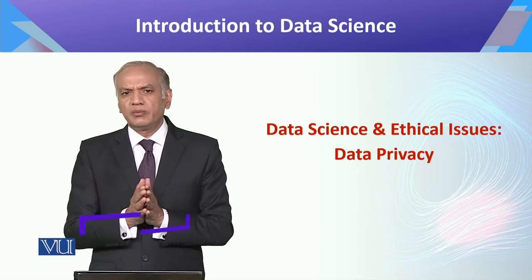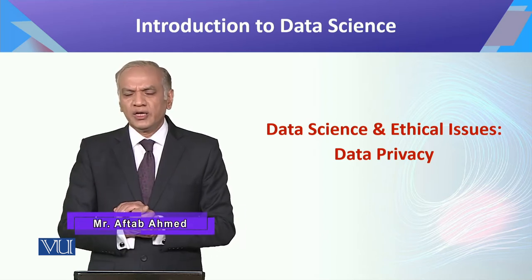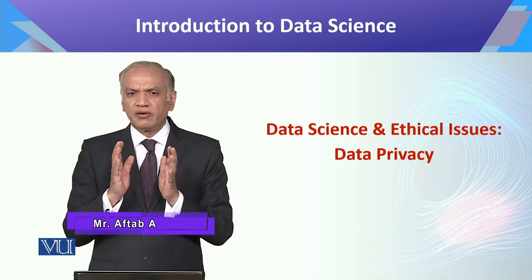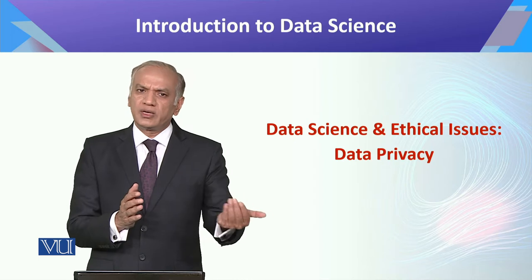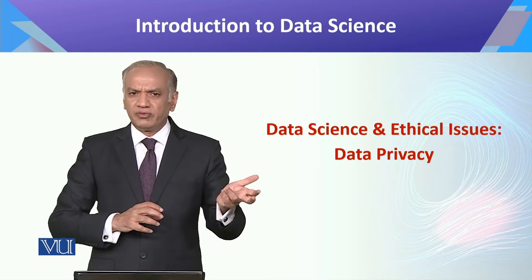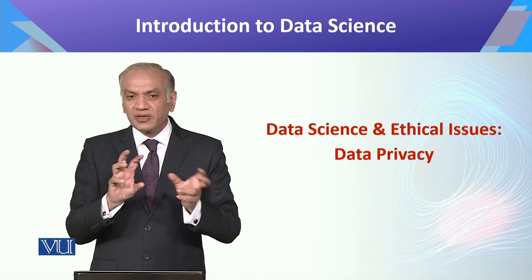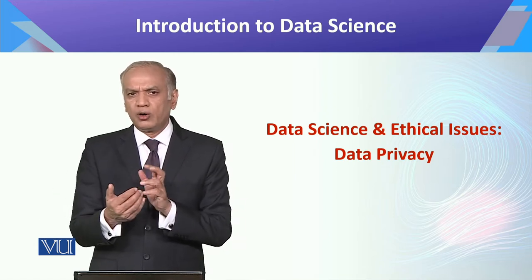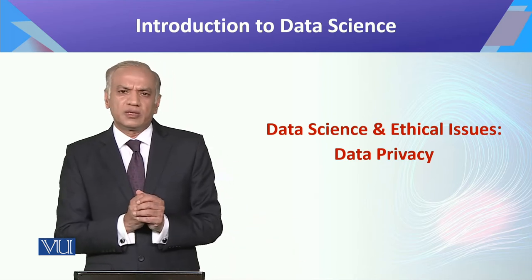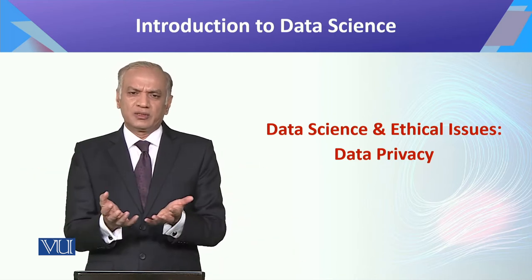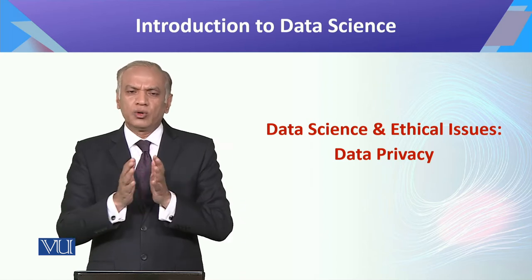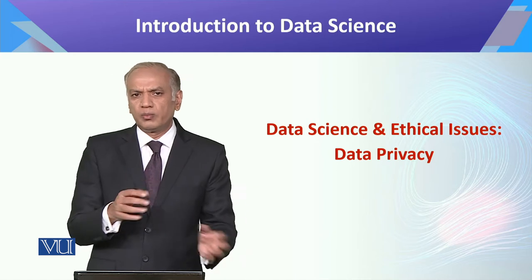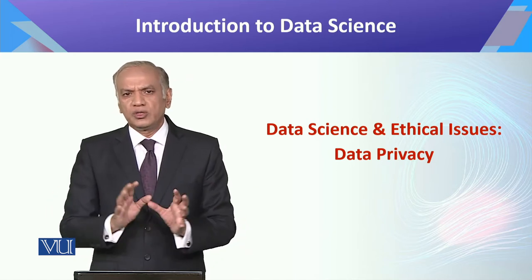We will look at what significance data privacy holds in computer science, how we can use it, its different areas within data privacy, and how effectively using them gives us good results. To minimize the risk — as we discussed earlier — there is business risk associated with data. If a data breach occurs, we need to understand how to avoid it and how to secure data whether it is private or public.